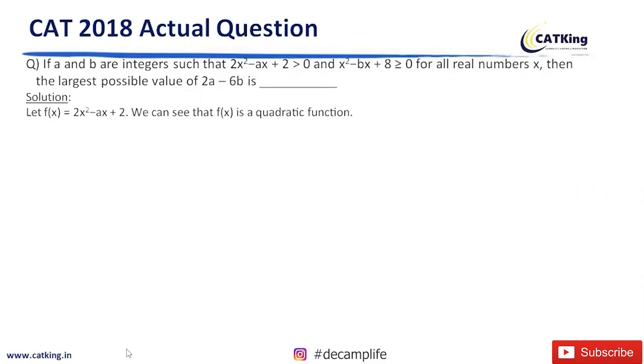See, this is a quadratic equation. When this quadratic equation is greater than 0, then discriminant value of discriminant will be less than 0.